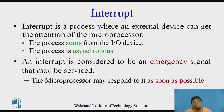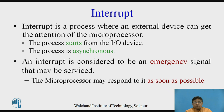What do you mean by interrupt? An interrupt is a process where an external device can get the attention of the microprocessor. The processor starts from the I/O device and the process is asynchronous. In any processor-based system, along with the processor, a number of other peripherals or I/O devices are included in the system.